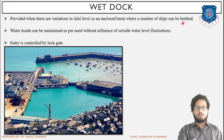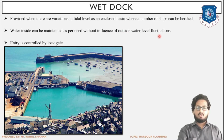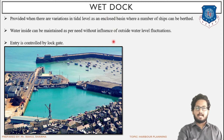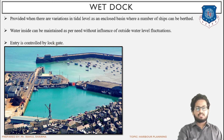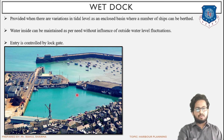Wet dock provides a space or area for accommodating a number of ships. Water inside can be maintained as per need without influence of outside water level fluctuations. It is constructed to account for water level fluctuations where the fluctuation is very high or considerable. In that case wet dock is constructed. If there is not much fluctuation, there may be a simple tidal basin instead. Entry is controlled by the lock gate. Due to provision of this gate, the fluctuation in tidal water level will not affect the operations being carried out in this basin or dock.